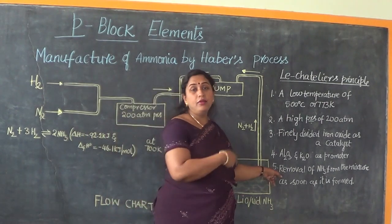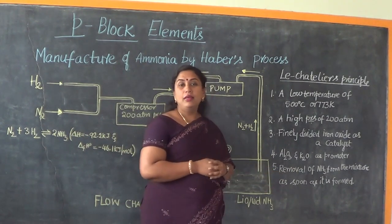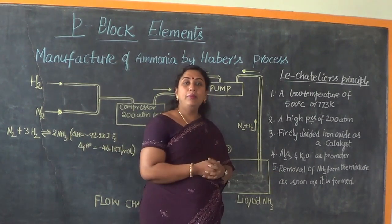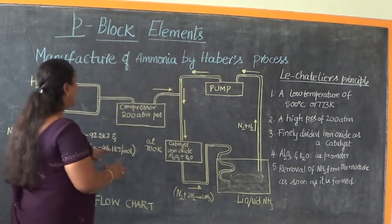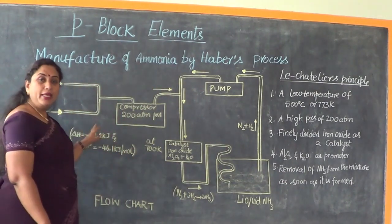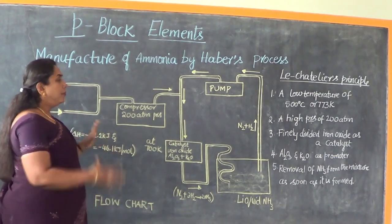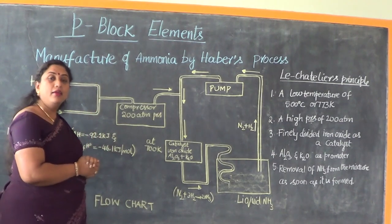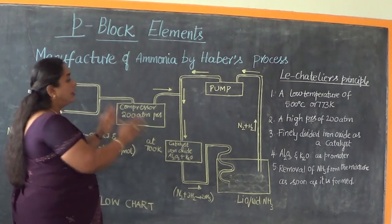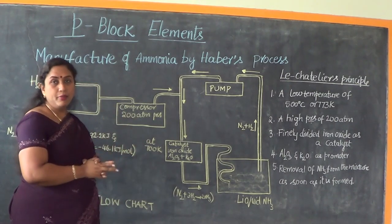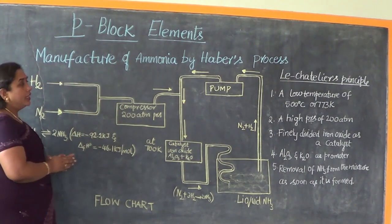An important point to note is that the ammonia obtained will be in liquid form, not gaseous ammonia. Now let us look at the flow chart which explains how Haber's process is carried out. An important point is that there is no wastage of constituents anywhere in the manufacturing, as the setup is designed so that none of the constituents are wasted.